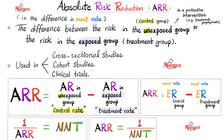When I say absolute risk reduction, it's reduction — so we subtract. Start with the big number and subtract the smaller number from it. So this is something that is supposed to make me safer, i.e. reduce the risk — meaning the risk is lower after exposure. For example, prophylactic therapy, vaccination, or seat belt use.